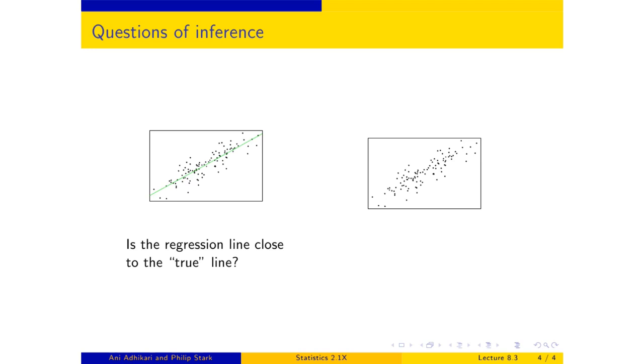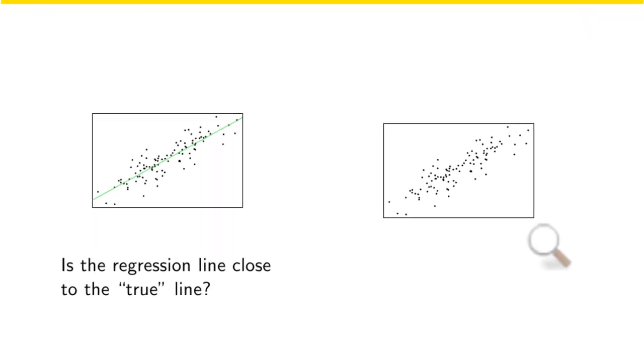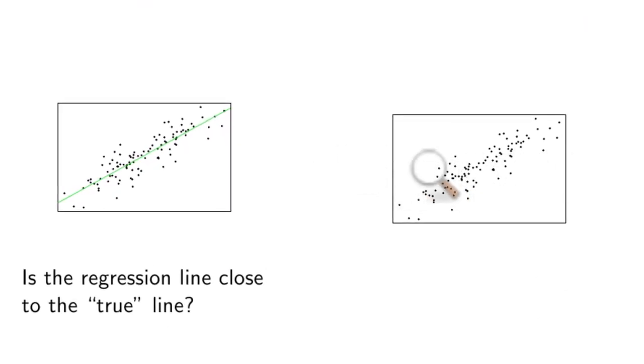But you know, those points came from random errors about a line. And isn't it just possible that the actual line is flat? And that your errors just came out in such a way that the scatter diagram has acquired a slope that is spurious. It's false. It's a result of chance variation. It's possible.